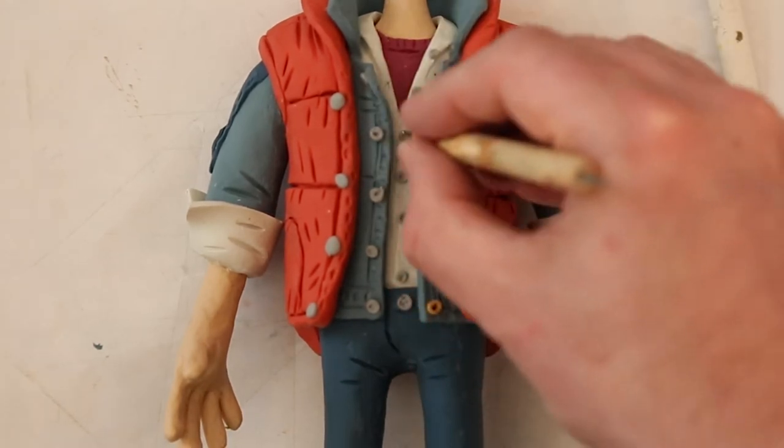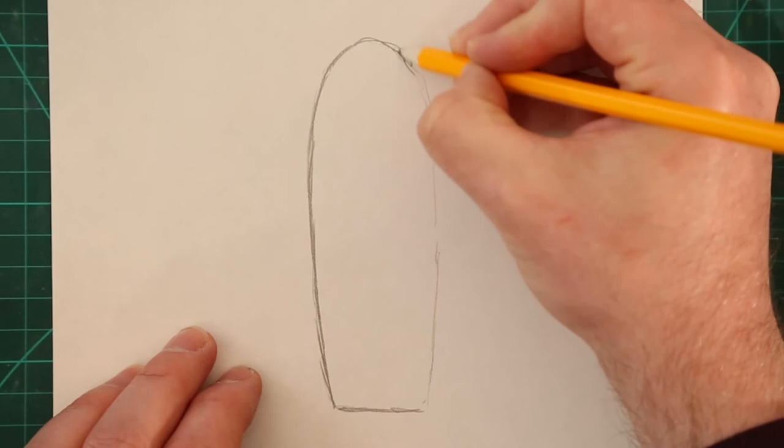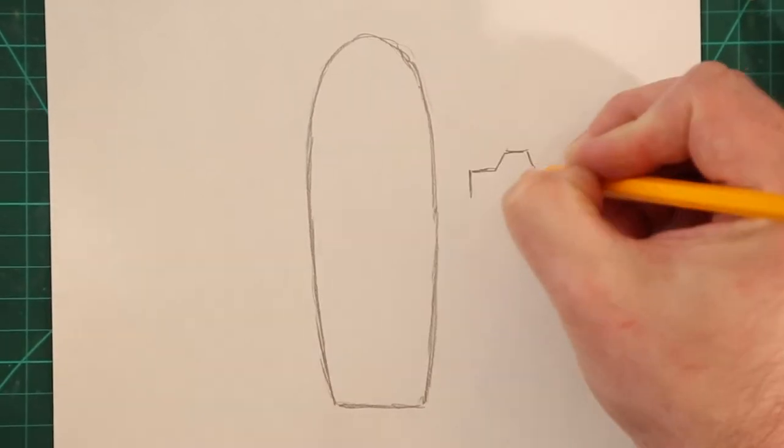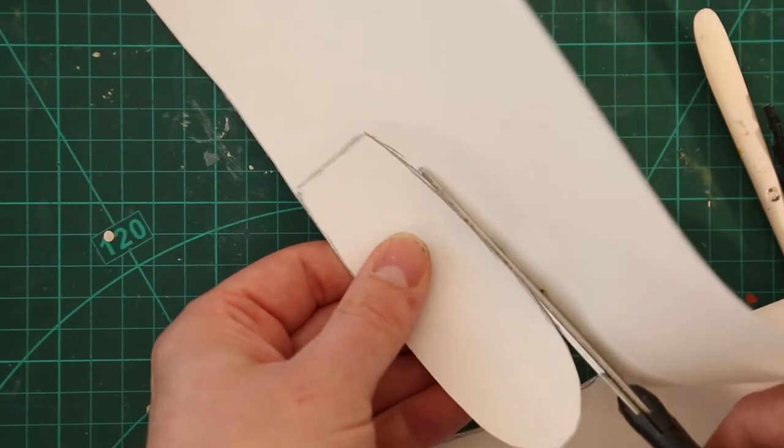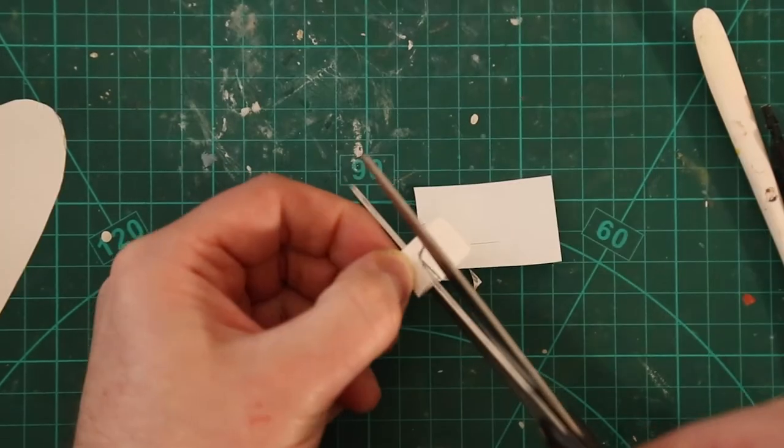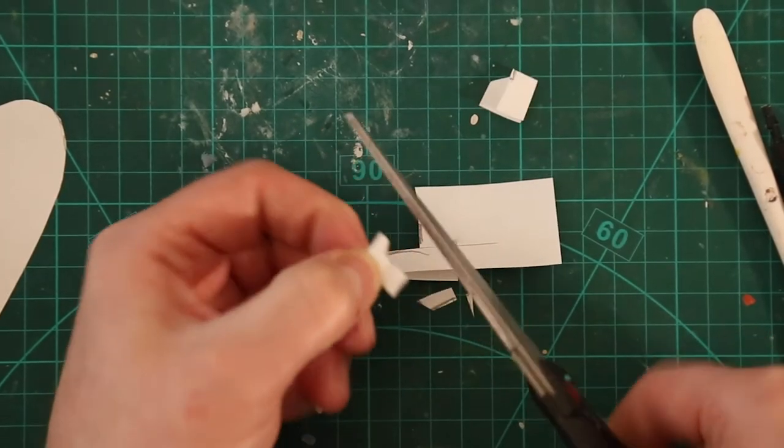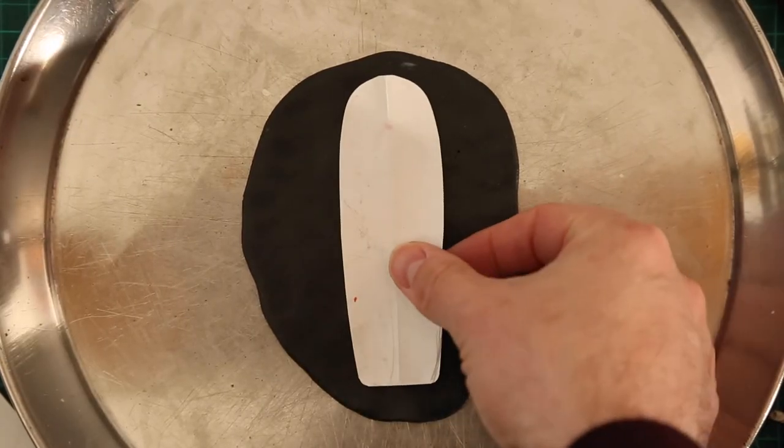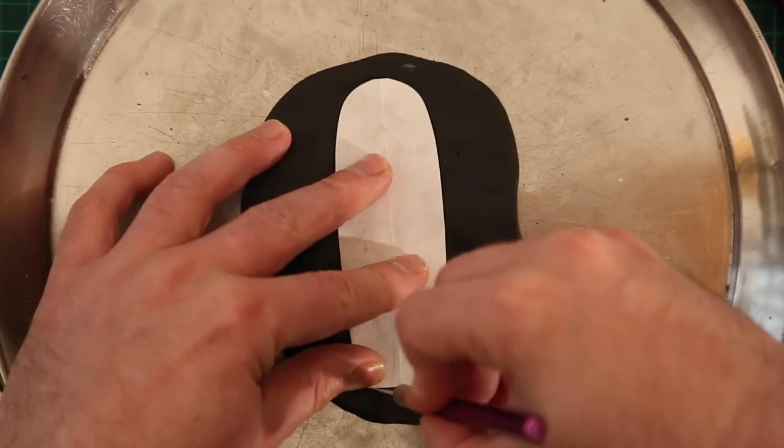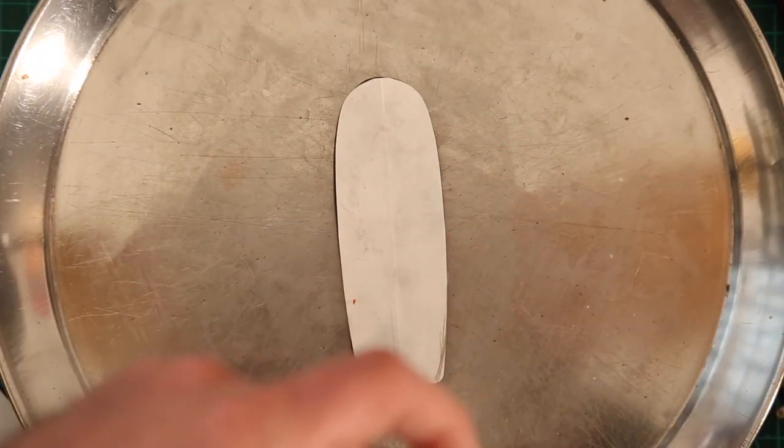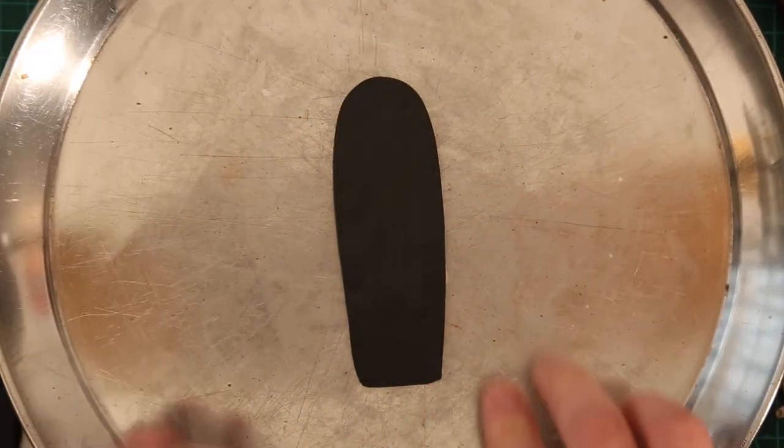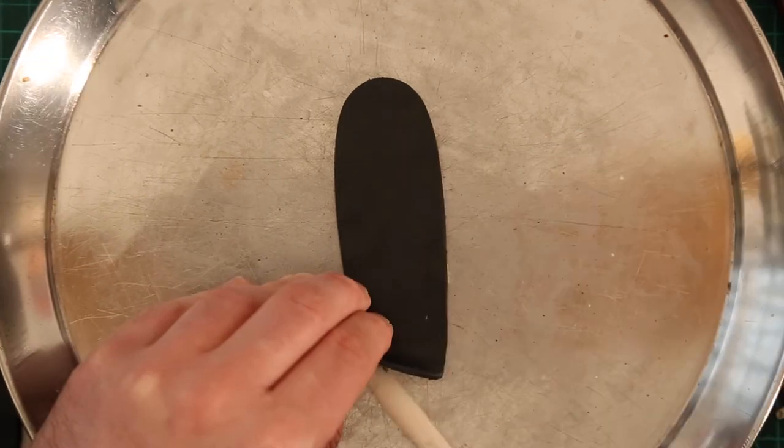Now I'm just going to start making some of his accessories out of Fimo, and I'm just sketching out the skateboard. I actually used to work in a skate shop when I was younger, and I used to put together people's custom skateboards - putting the bearings inside the wheels and screwing on the trucks, and then applying the grip tape. I used to really enjoy doing that.